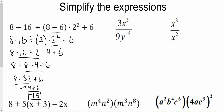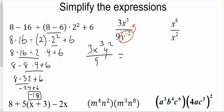Our next problem: we've got a negative exponent. Anytime we have a negative exponent, we can pull that negative exponent across the fraction bar, so we get 3x cubed. So we get 3x cubed y squared over 9. Now we can simplify: 3 goes into 3 once, 3 goes into 9 three times, and so we get 3x cubed y squared over 3.